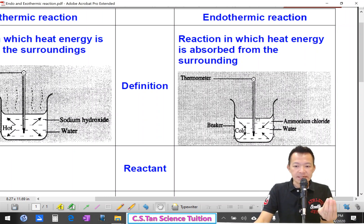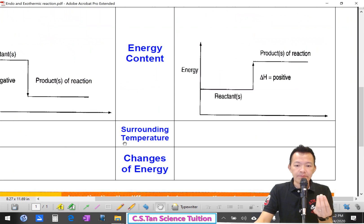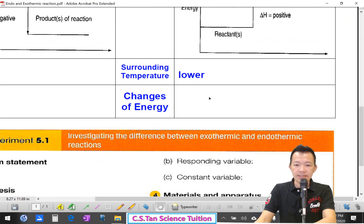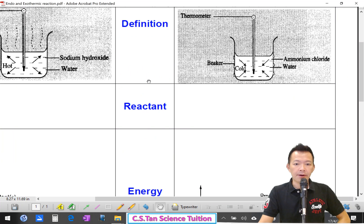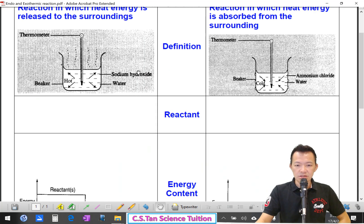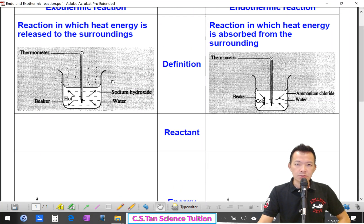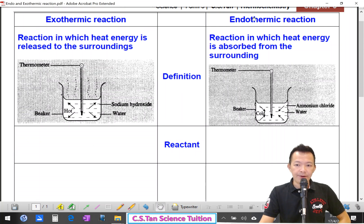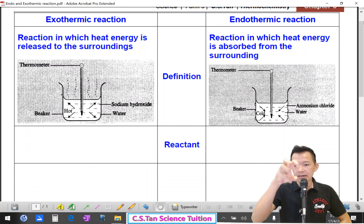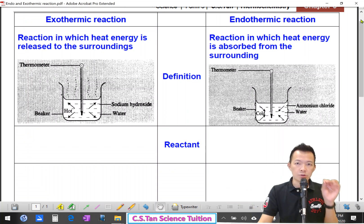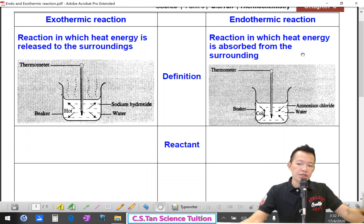What happened to the surrounding temperature? Surrounding temperature will drop. 周围环境的温度就降低了. So this is endo and exo — 放着跟吸着的化学反应. Most of you just know about exo. But is there any endo? Is there really such a chemical reaction where you add powder into water and suddenly the temperature drops?